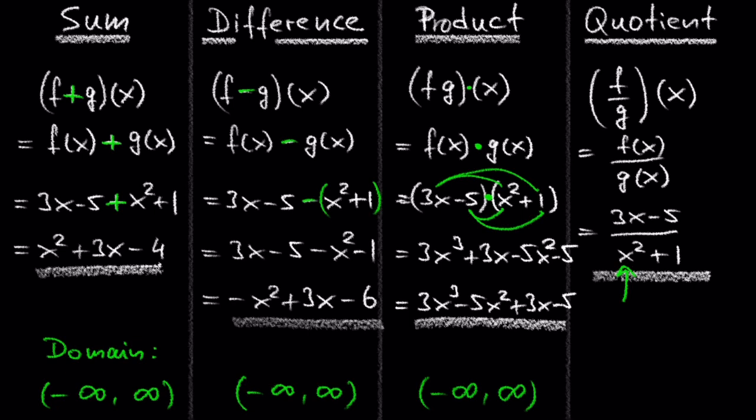No matter which value for x we plug in, either positive, negative or zero, when we square the result will always be positive or zero. And a positive or zero plus one is always positive. So the domain in this example is not restricted. It's all real numbers, from negative infinity to infinity.